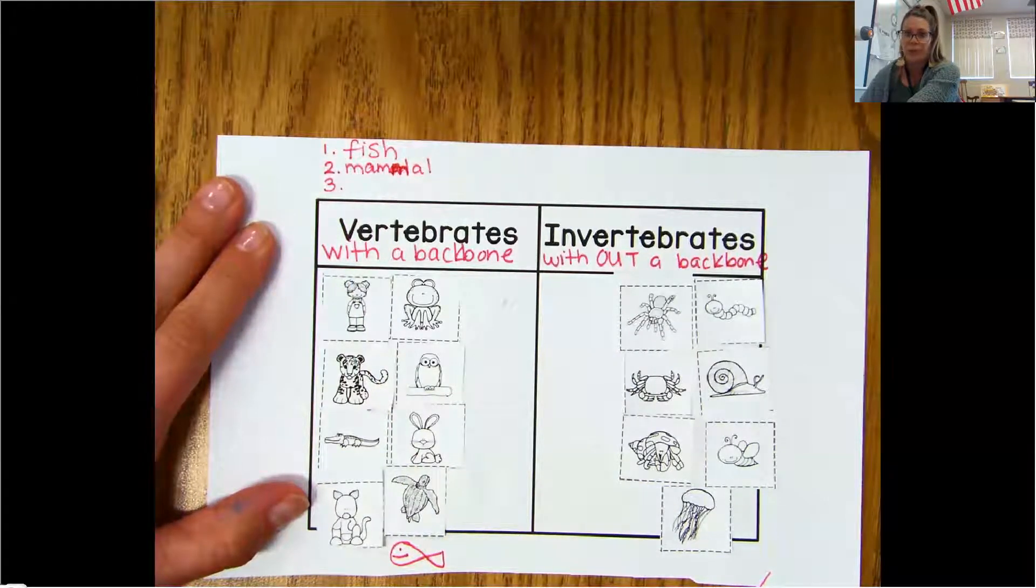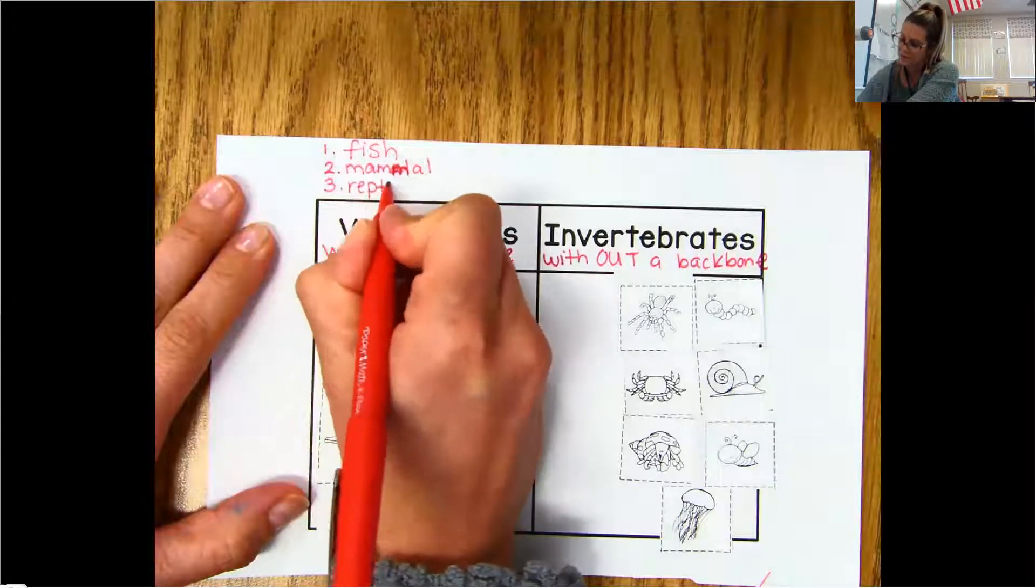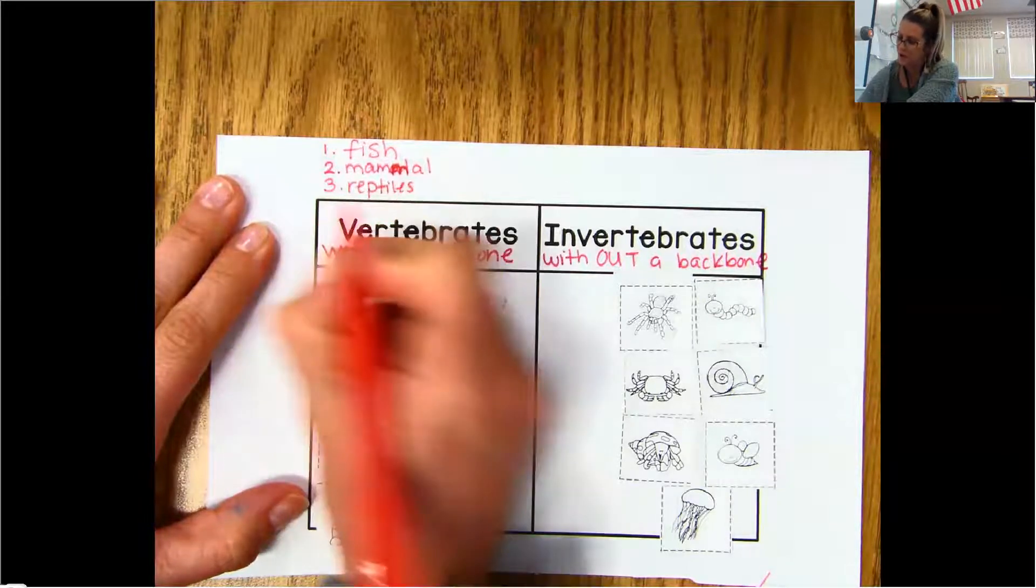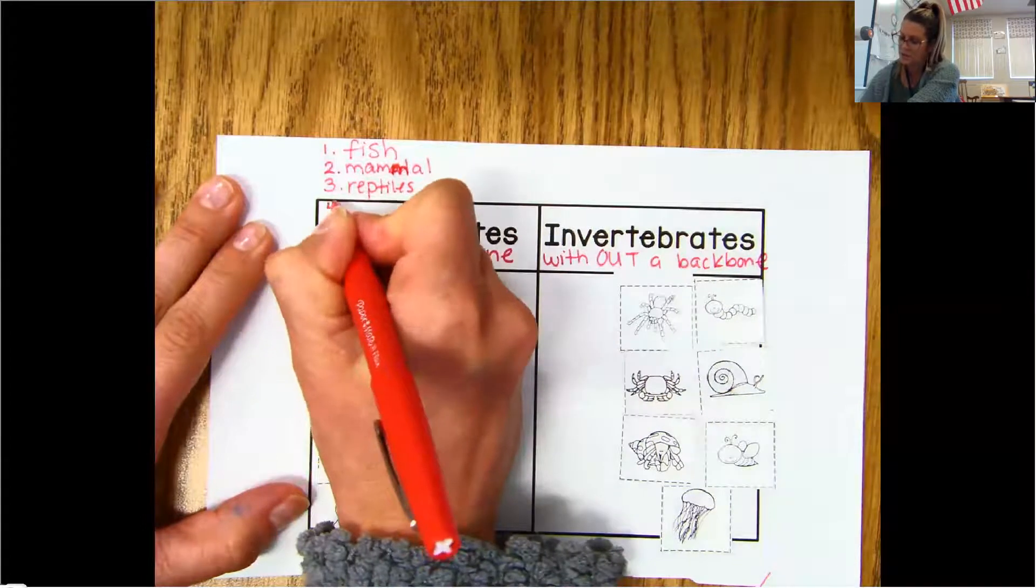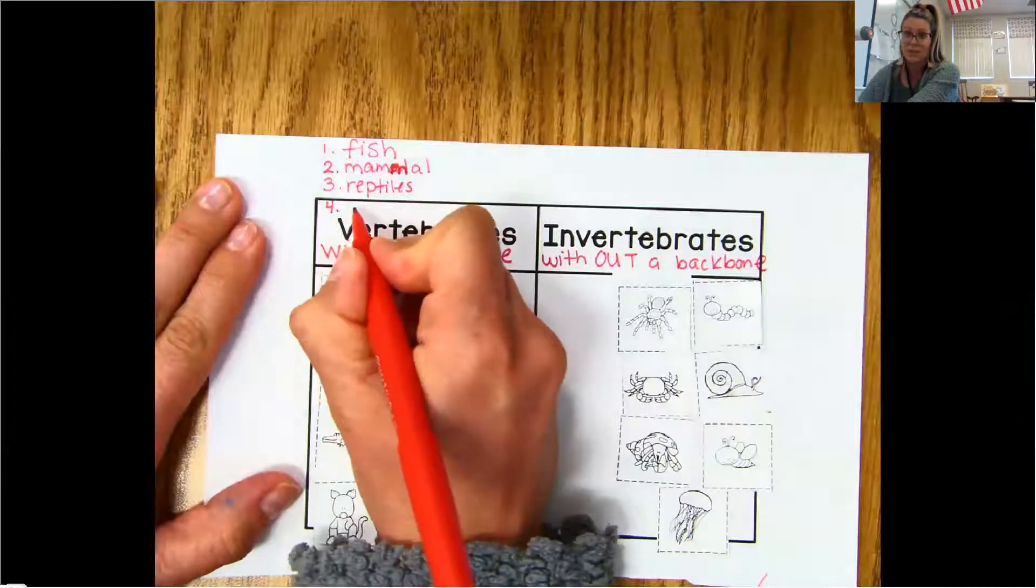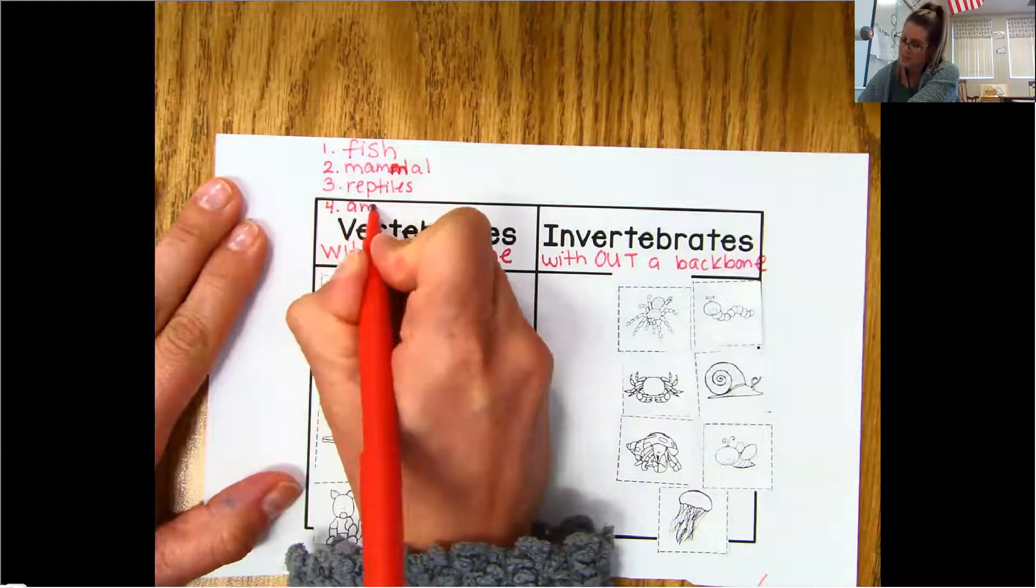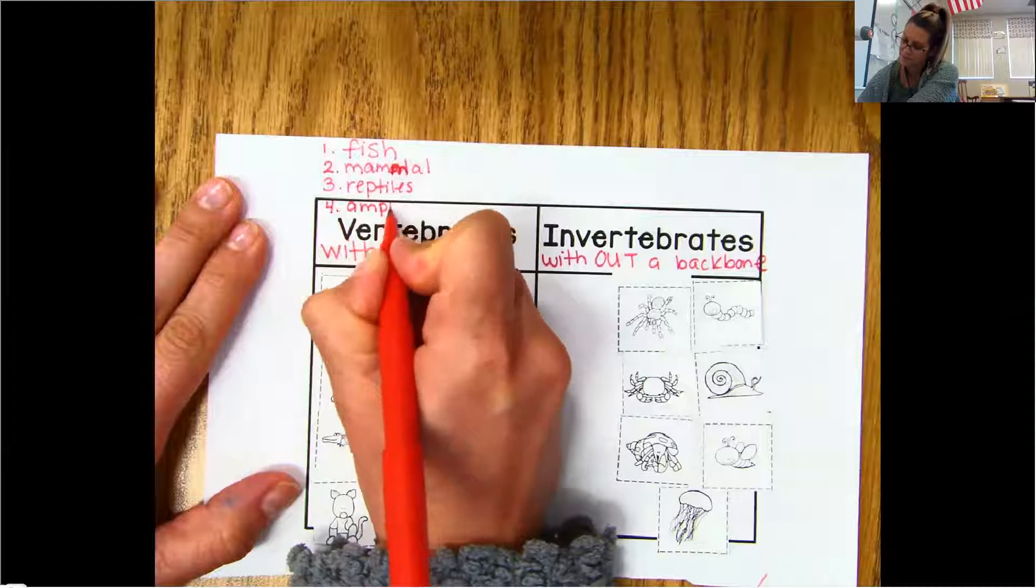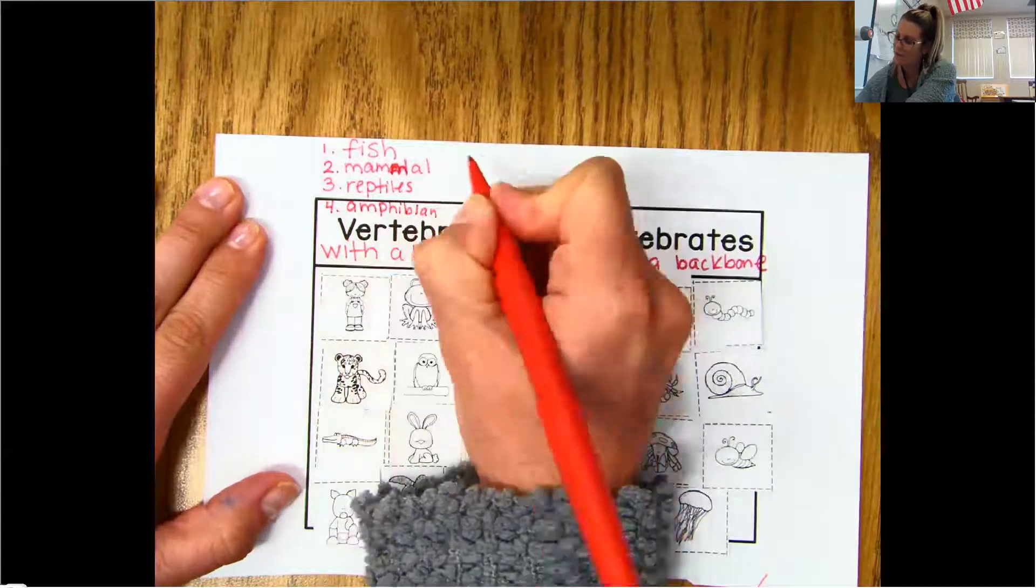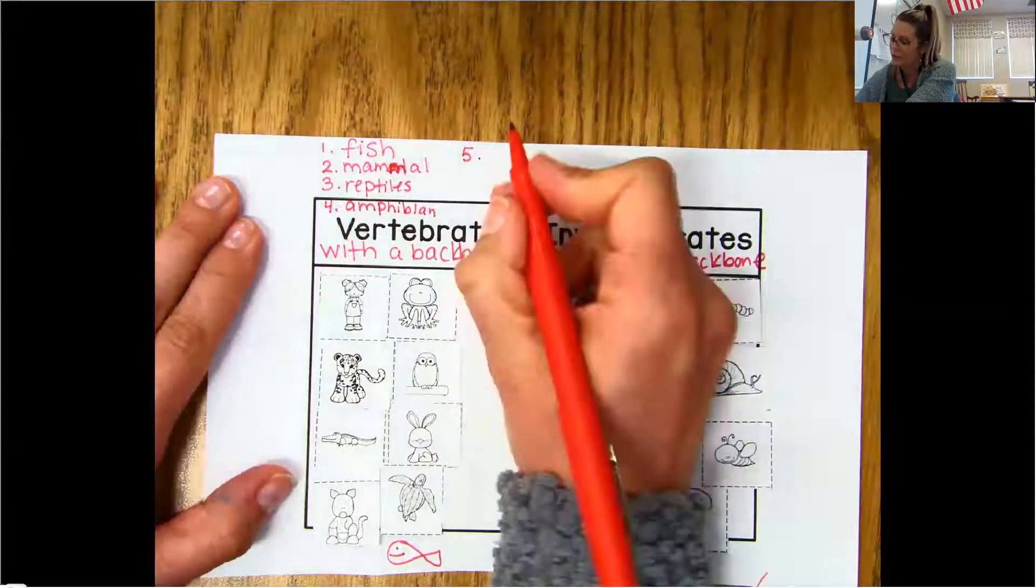What else? Oh, the reptiles. We've got... what else? What's one that's confused with reptiles sometimes? Amphibians. And then our fifth one is what? Bird, right?